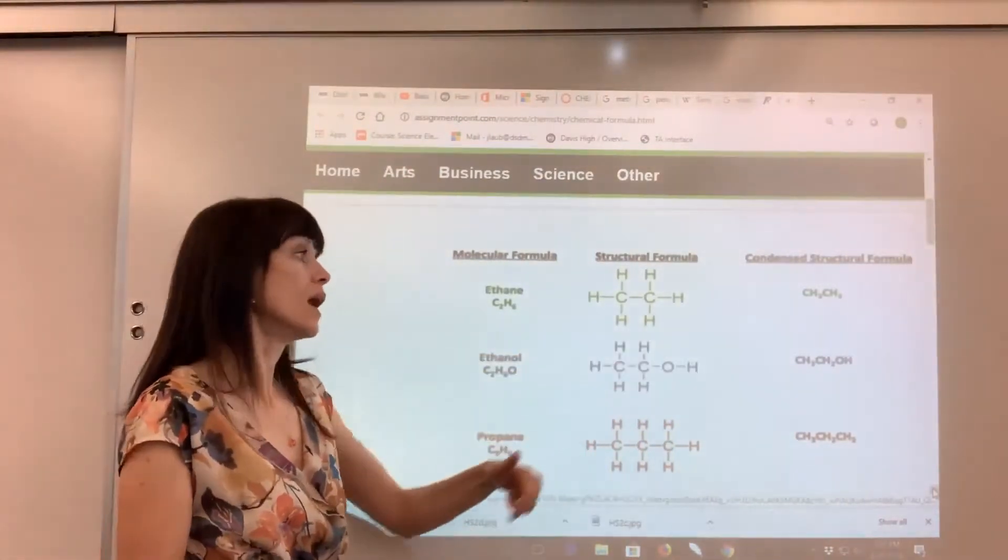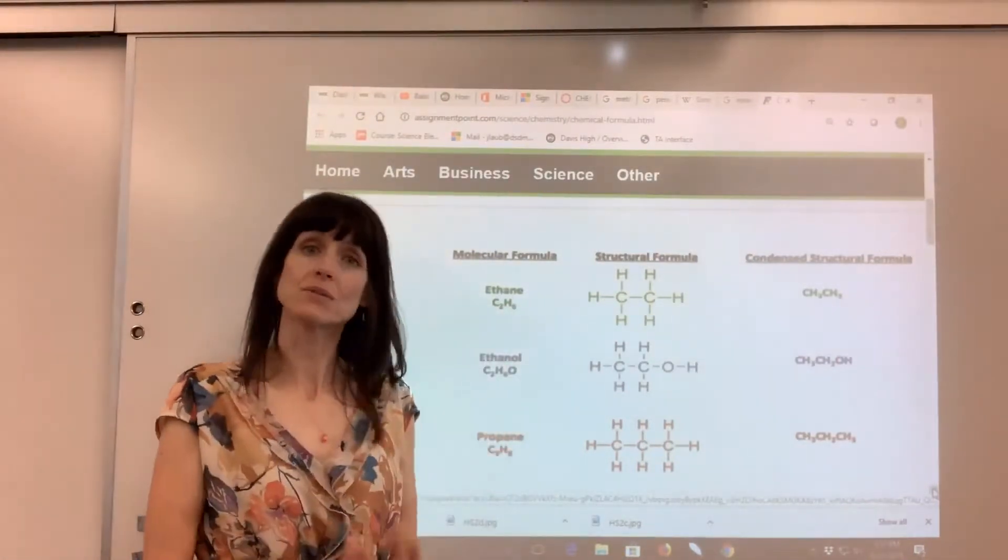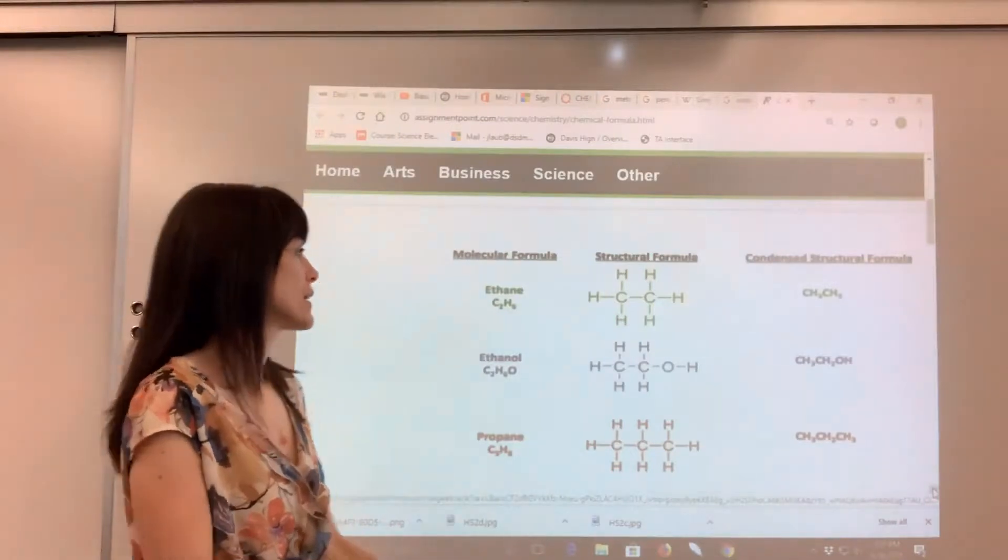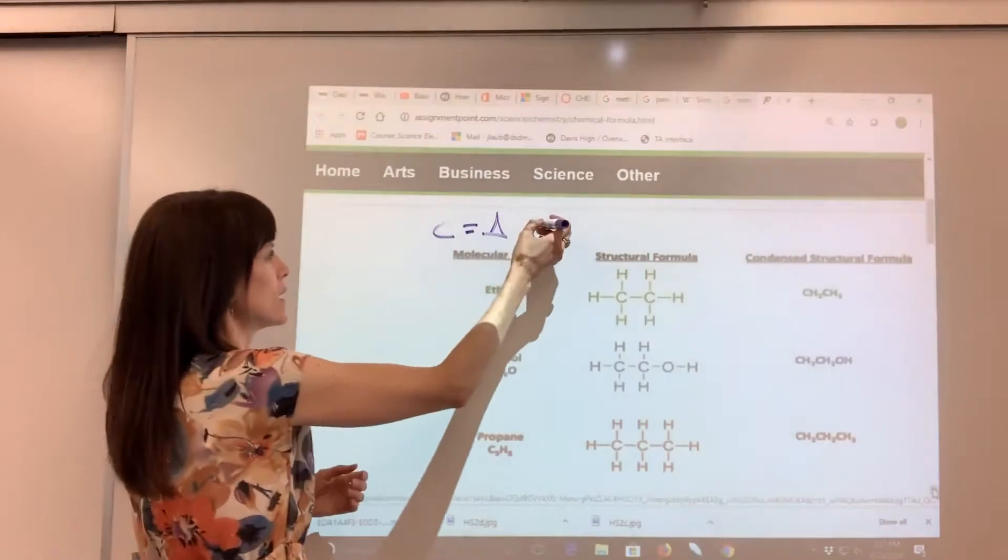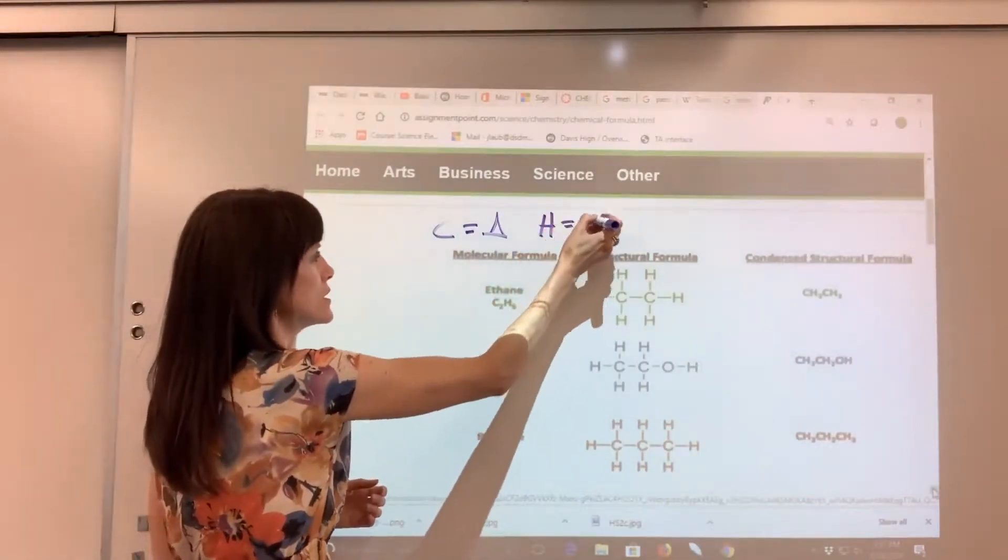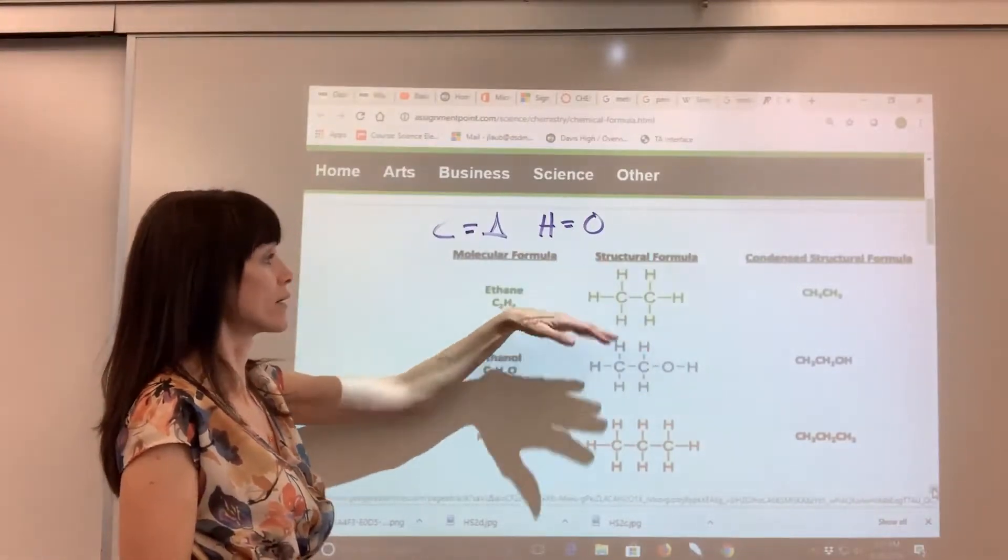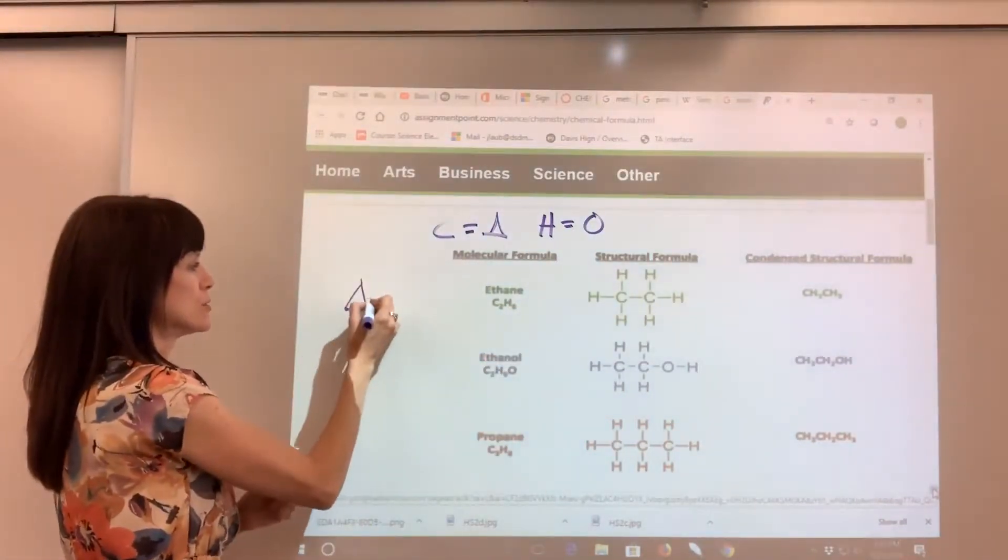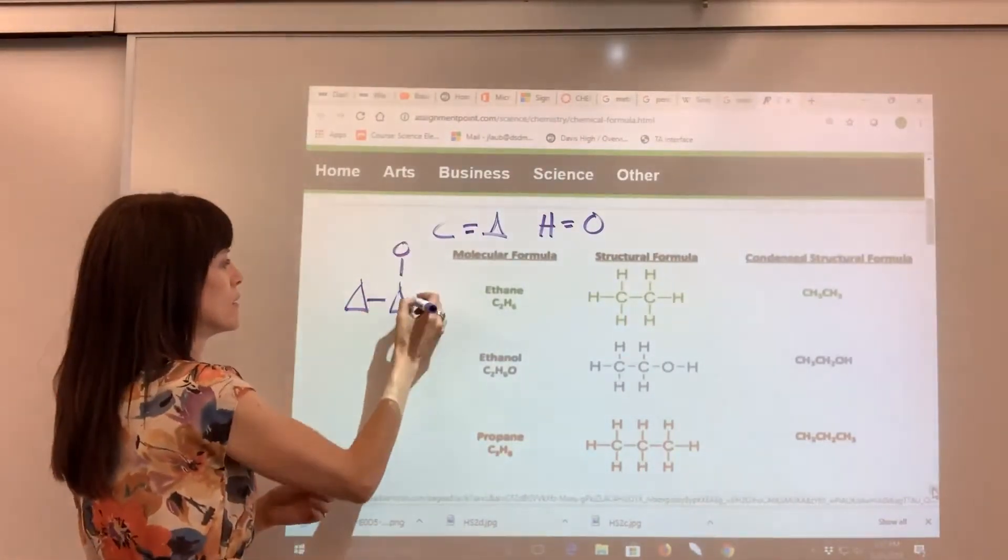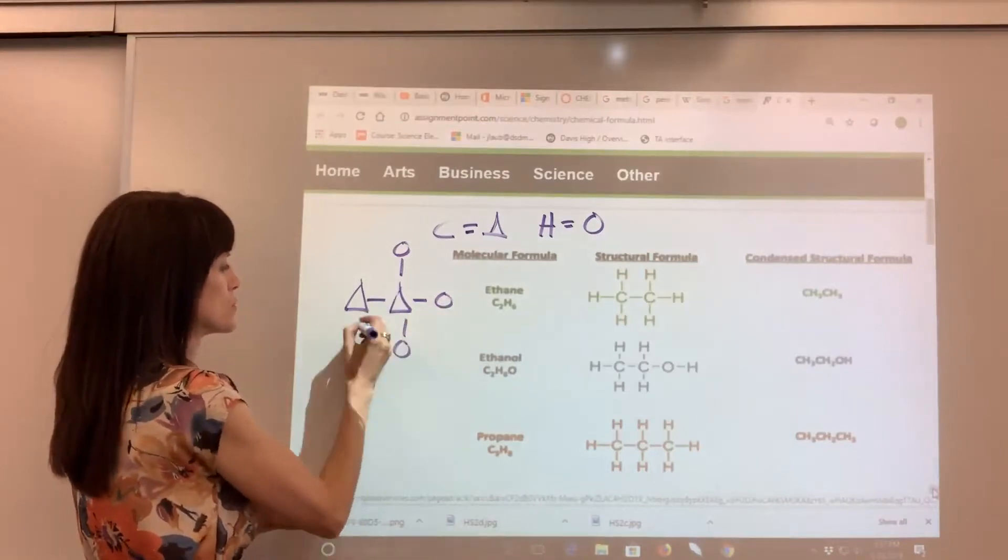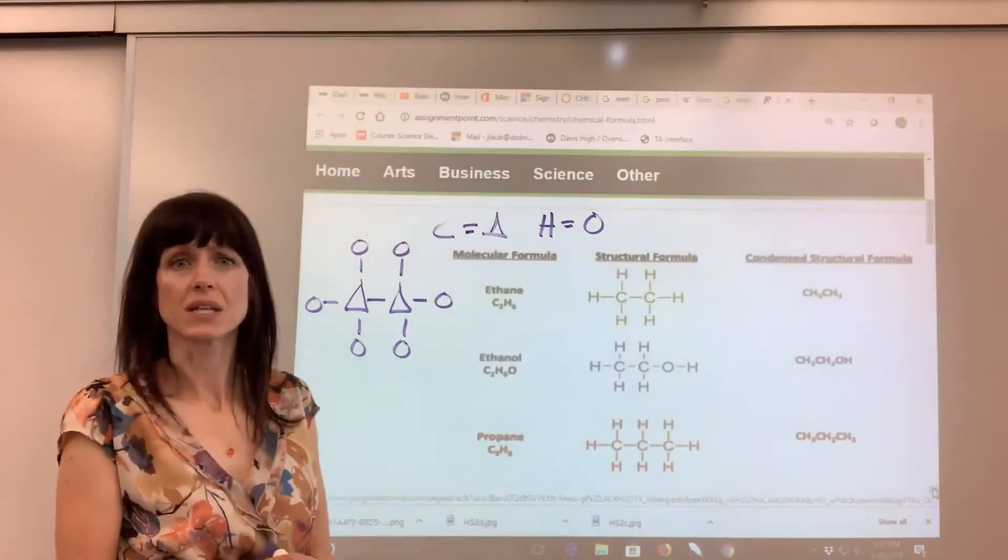So if I were going to draw this in a model or as a particulate form, I'm actually trying to represent the atoms with different shapes. So I could say a carbon is going to be a triangle and a hydrogen is going to be a circle. And so for this model of ethane, I would have two triangles connected together and then I would have the circles, which represent the hydrogens, bonded. And that would be an example of a particulate form.